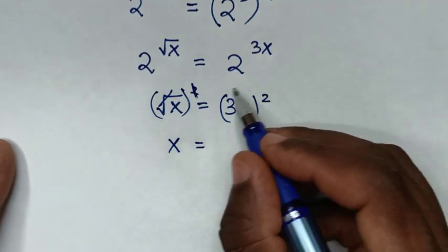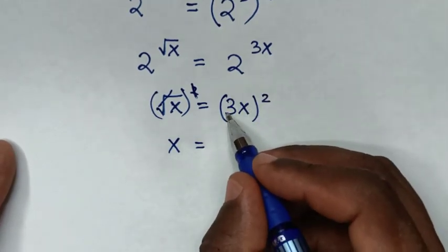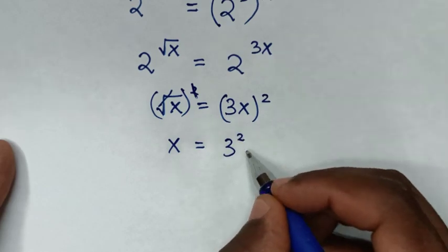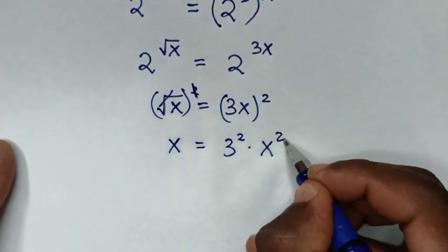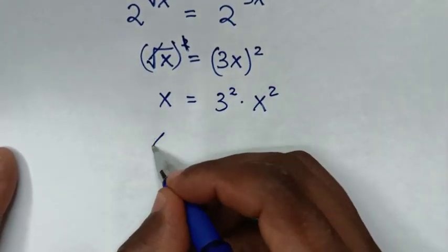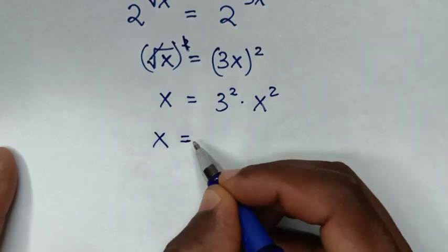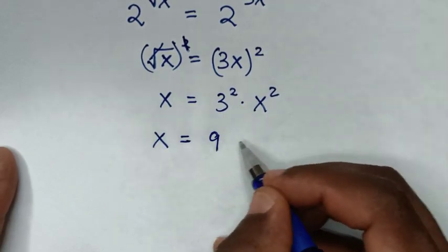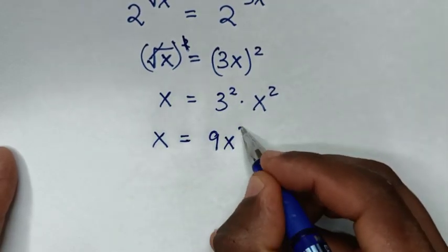we take this square inside the bracket, so it will be 3 square, then times x square. Then it will be x is equal to, 3 square is 9, then times this x square.